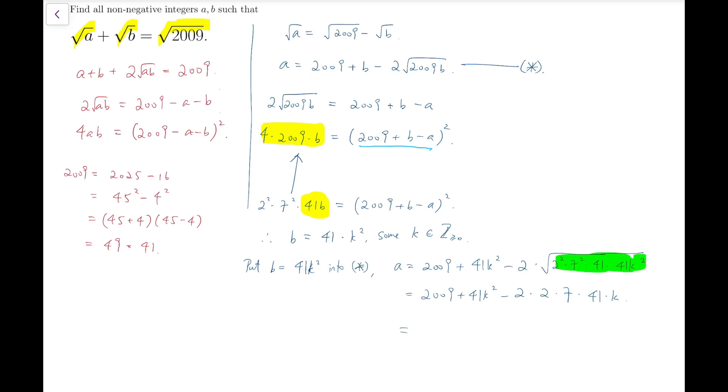So that a equals 2009 plus 41k² minus 2 times 2 times 7 times 41k. Maybe I should not multiply the number so quickly, but I'm going to take out the common factor of 41 instead. So 41 times (49 plus k²), and the remainder in the bracket should be 2 times 2 times 7k, which is 28k.